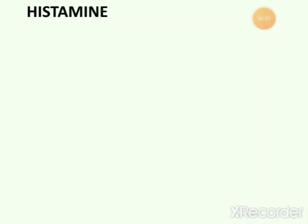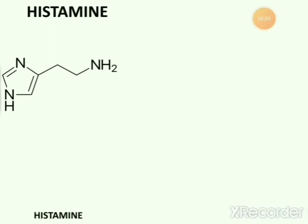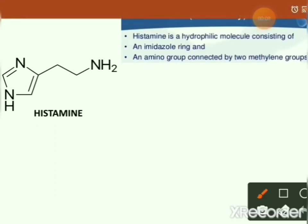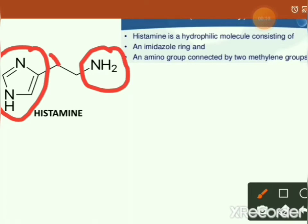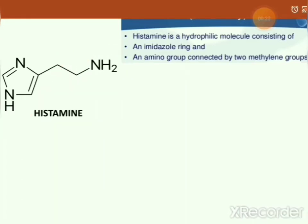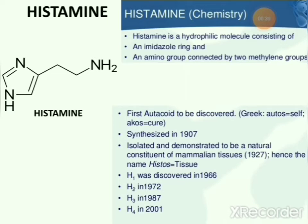Now we will study about histamine. Histamine is a hydrophilic molecule consisting of an imidazole ring and an amino group connected by two methylene groups. Histamine was the first autokoid to be discovered. The term autokoid is derived from the Greek words 'autos' meaning self and 'echos' meaning cure — combined they represent self-curing agents.